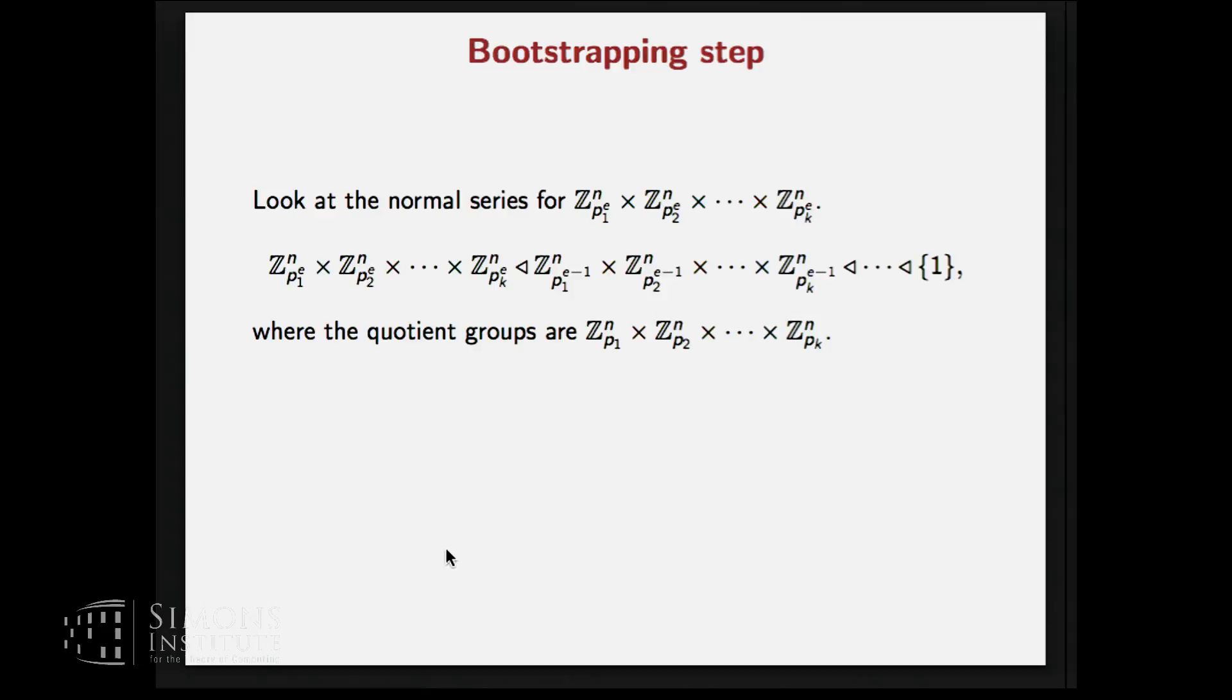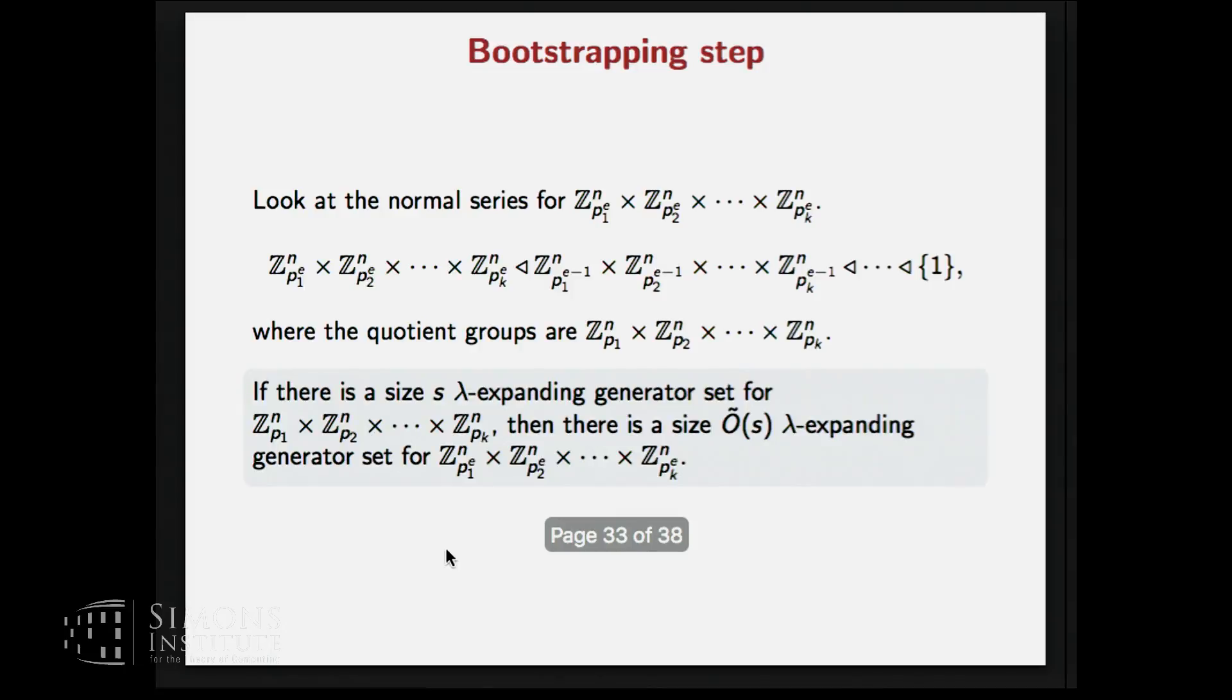And how do we still get an expanding generating set for this product group? So because this product group happens to be abelian, we can have similar series for this, just like we had for the original group G. And we will apply the same procedure repeatedly. So look at the normal series for this, where the quotient group is fixed and it is only this Zp1^n to Zpk^n. So this is a slightly simpler group than the original one. And we need to get an expanding generating set for this one. Again, the answer is apply the same procedure recursively. And also the size relation is very nice here. That is if we have a size s expanding generating set for this, then we have s times some polylog vectors generating set for this.